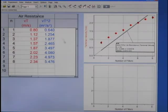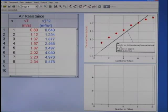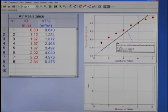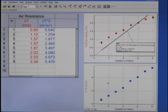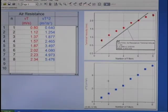To get this onto a graph, I can just take this column header and drag it over to the y-axis of my graph, and that gives me my graph of the square of the terminal velocity as a function of the number of coffee filters.